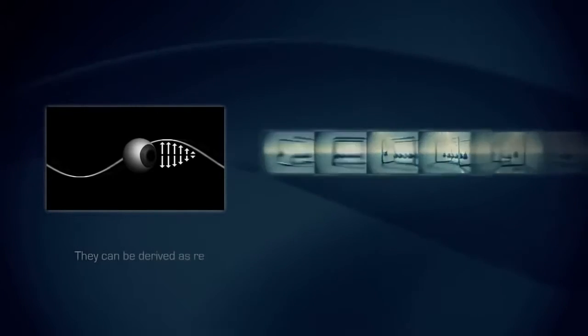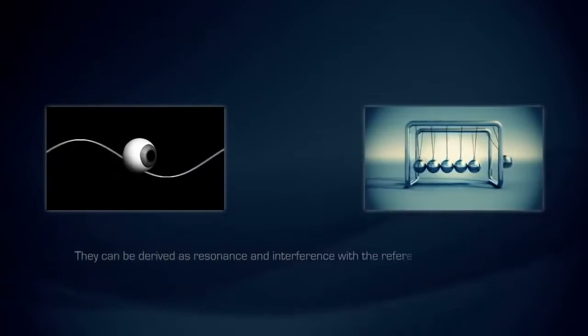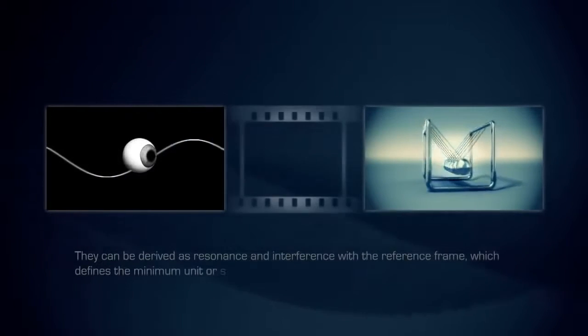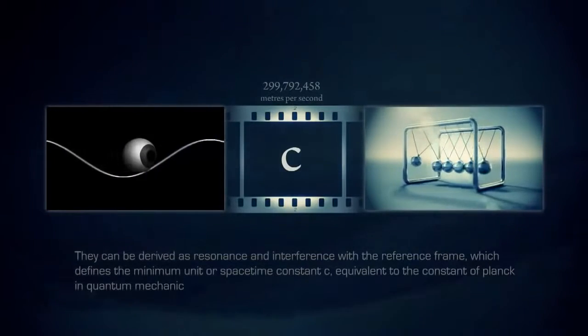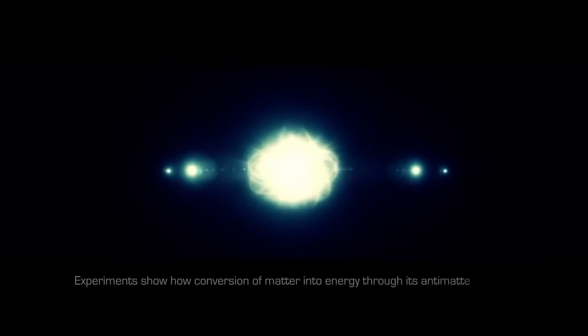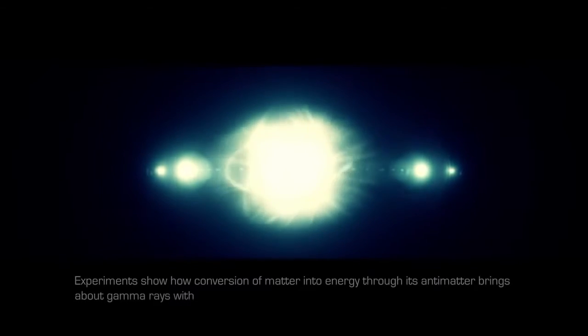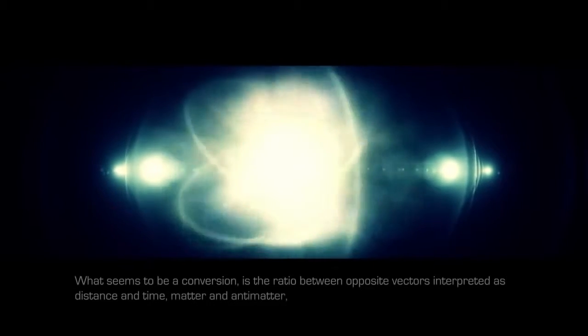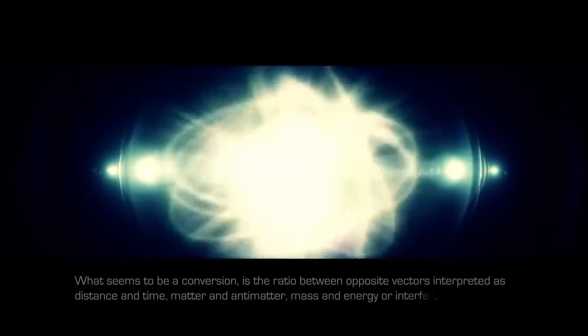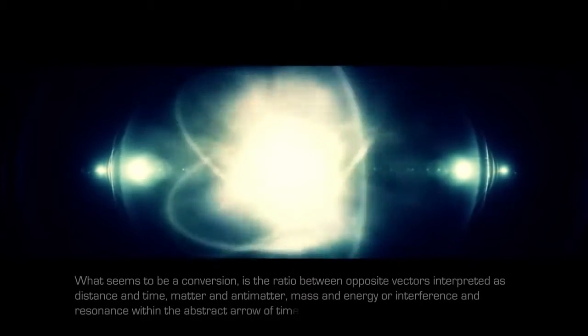They can be derived as resonance and interference with the reference frame, which defines the minimum unit or space-time constant C, equivalent to the constant of Planck in quantum mechanics. Experiments show how conversion of matter into energy through its antimatter brings about gamma rays with exact opposite momentum. What seems to be a conversion is the ratio between opposite vectors interpreted as distance and time, matter and antimatter, mass and energy or interference and resonance within the abstract arrow of time of C.